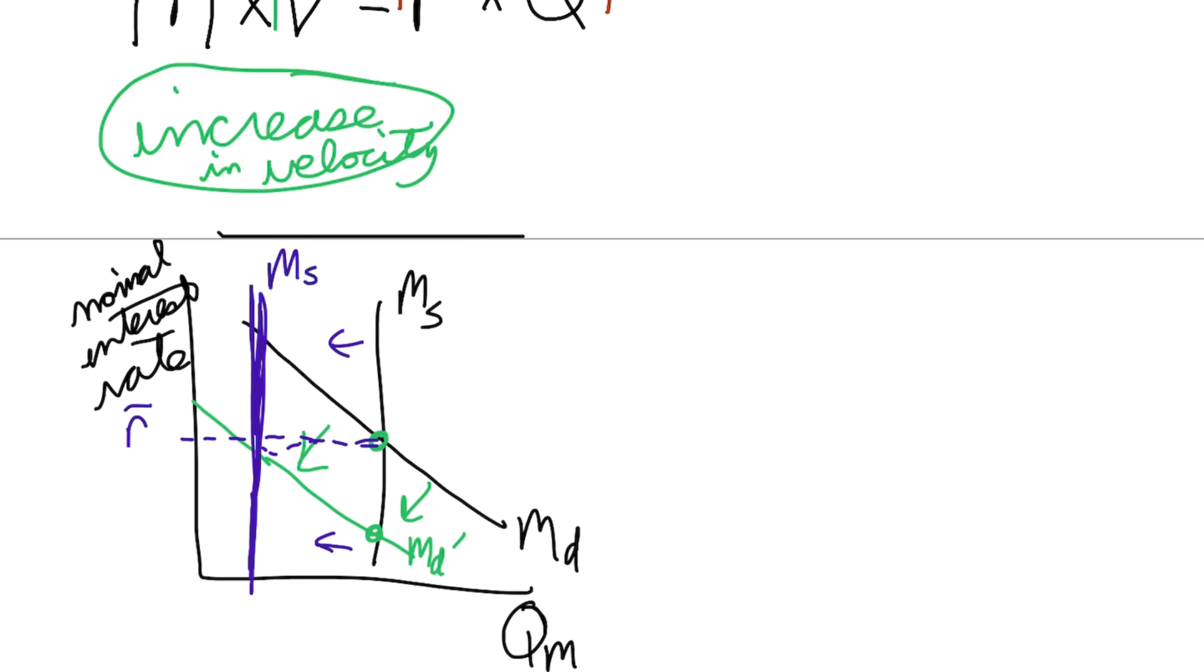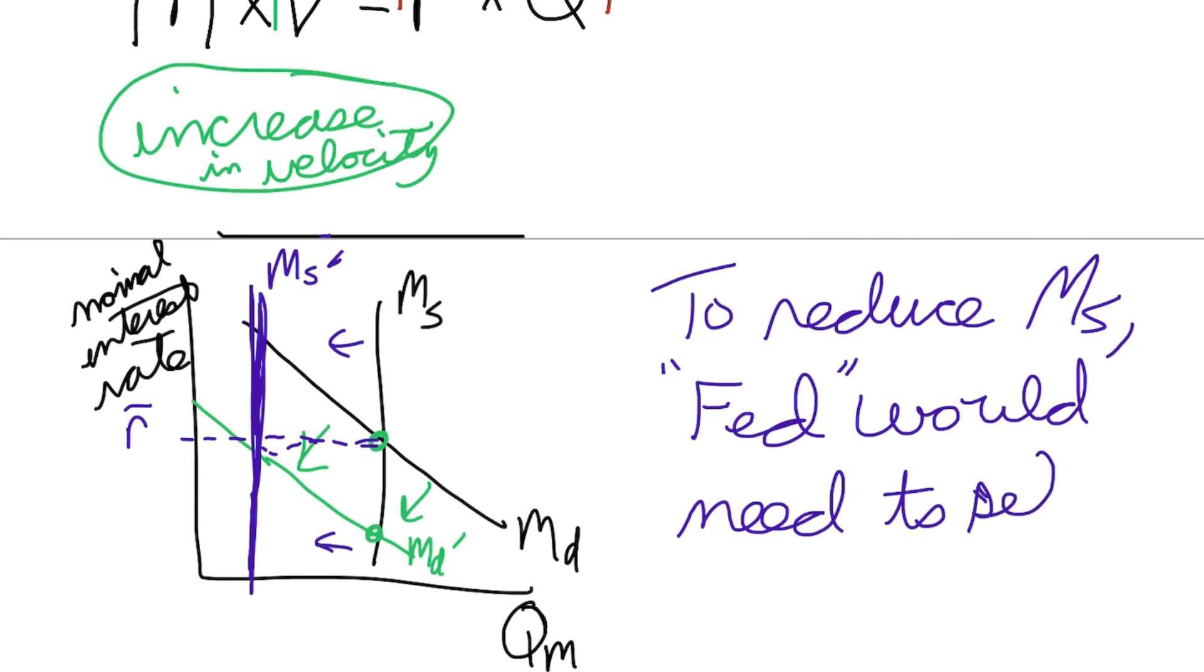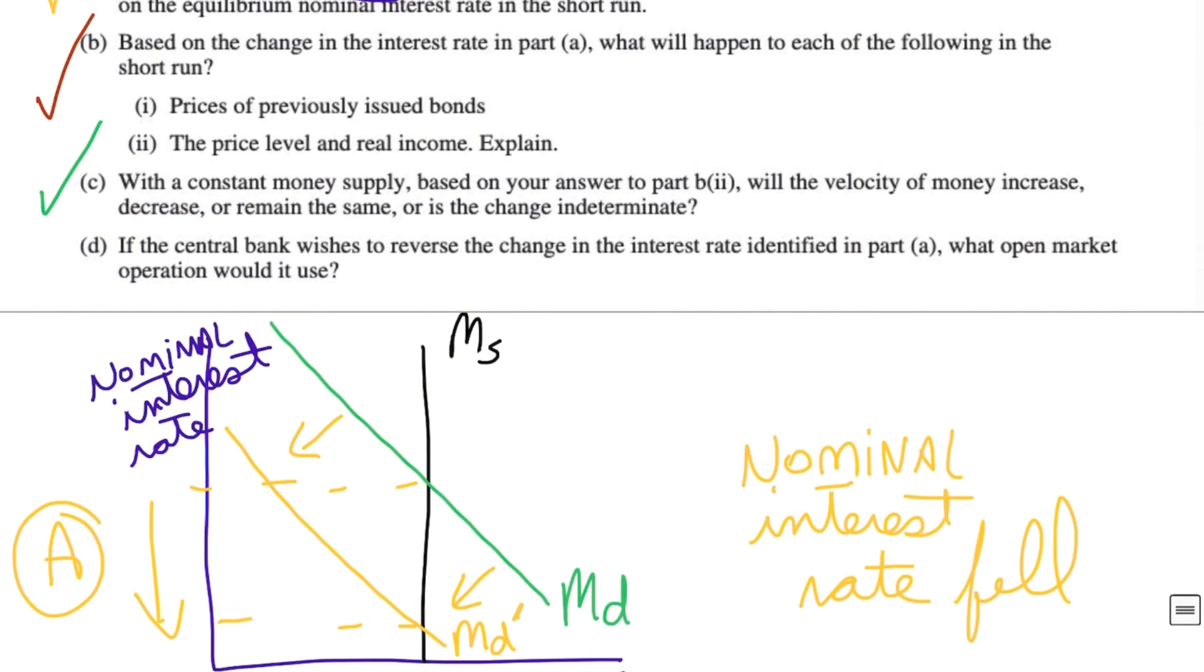To reduce the money supply, the Fed, the central bank, would need to sell bonds. That would be the open market operation, because that would reduce the money supply. And as a result, as we can see in the graph here, it would start to increase the interest rate. And we would basically move along that money demand curve until they were equal.